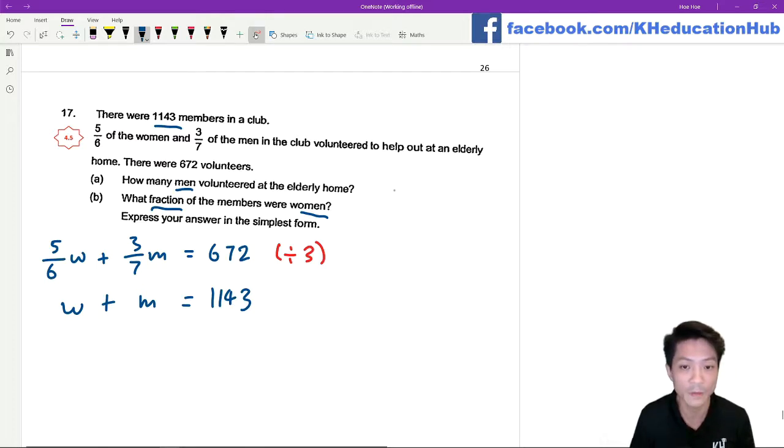Which means that 5 over 18 of the women plus 1 over 7 of the men is going to be 672 divided by 3, which is 224.